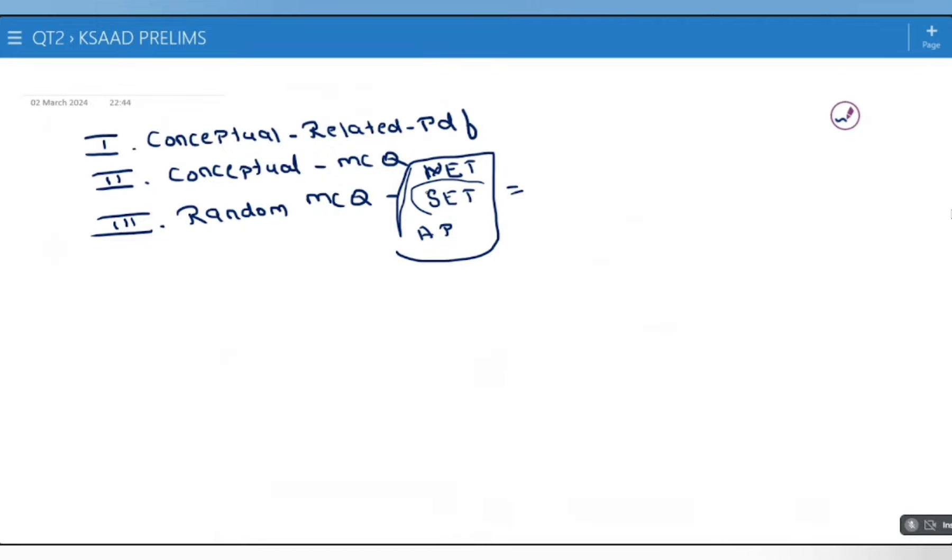Our MCQs are divided into three levels: LOD 1, LOD 2, and LOD 3. LOD stands for Level of Difficulty. LOD 1 is Level of Difficulty 1, where a common layman can answer. LOD 2 is Level of Difficulty 2, requiring examination technique. LOD 3 has the most difficult questions. We discuss all these three levels in random MCQs.